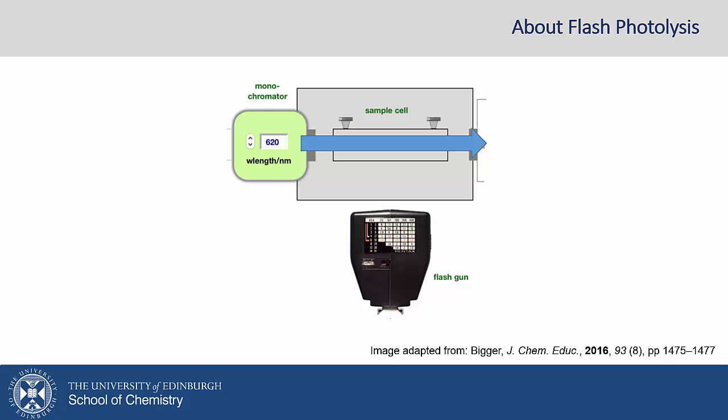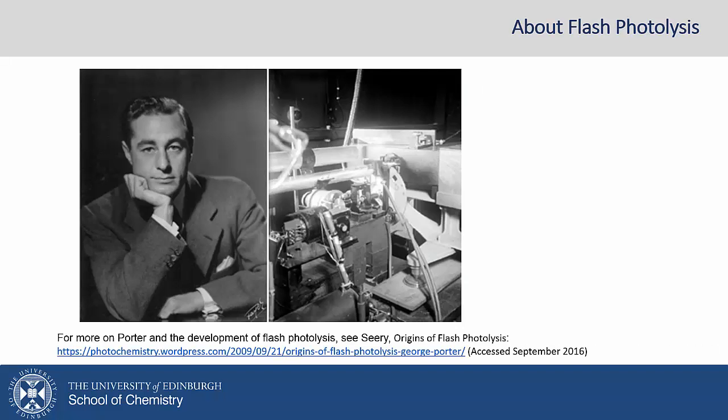This is done with a probe such as the beam in a UV visible spectrometer. The technique was developed by George Porter who was working with Norrish at Cambridge and the duo won the 1967 Nobel Prize in Chemistry for their work. They shared it with the German physical chemist Eigen who perturbed systems using sound.